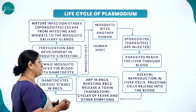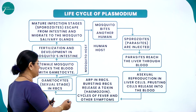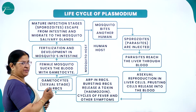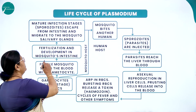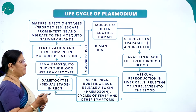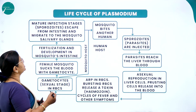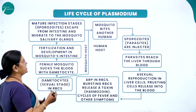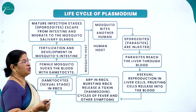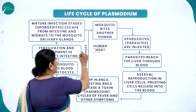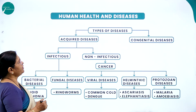Bursting liver cells release parasites into the blood, where asexual reproduction in RBCs takes place. Bursting RBCs release a toxin called hemozoin, which is responsible for cycles of fever and chills. Gametocytes form in the RBCs; the female mosquito sucks blood containing gametocytes. Fertilization and development occur in the mosquito's intestine, and the mature infective stage — sporozoites — migrate to the mosquito's salivary gland. There are two hosts: the human host and the mosquito host.